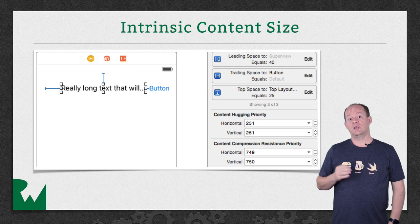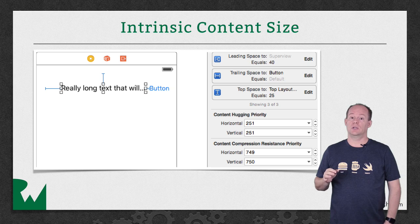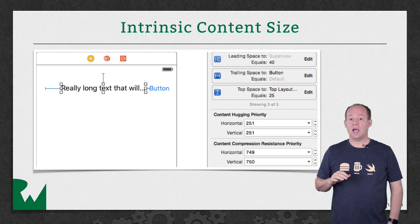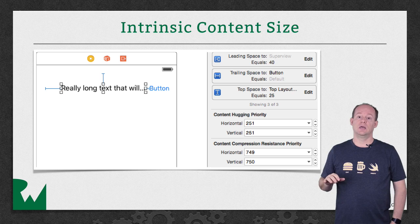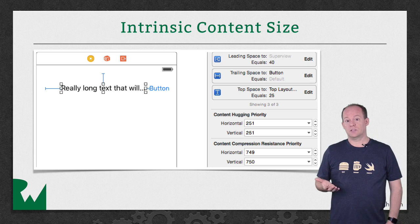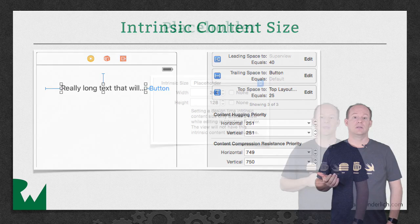Other views have an intrinsic size in just one direction, like a progress view. It has an intrinsic height but not width. For these views, the automatic constraints will only be created in one direction.